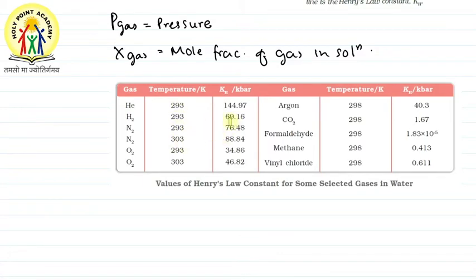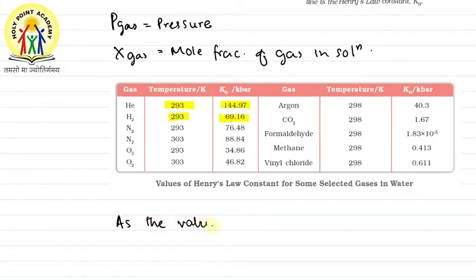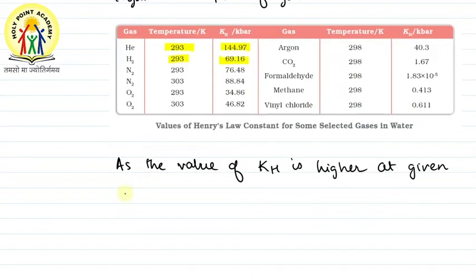For example, at a temperature of 293 K, the KH values for different gases are given — such as 144.97 and H₂ with 69.16. These are KH constants at a given constant temperature. The value of KH is higher for some gases than others.